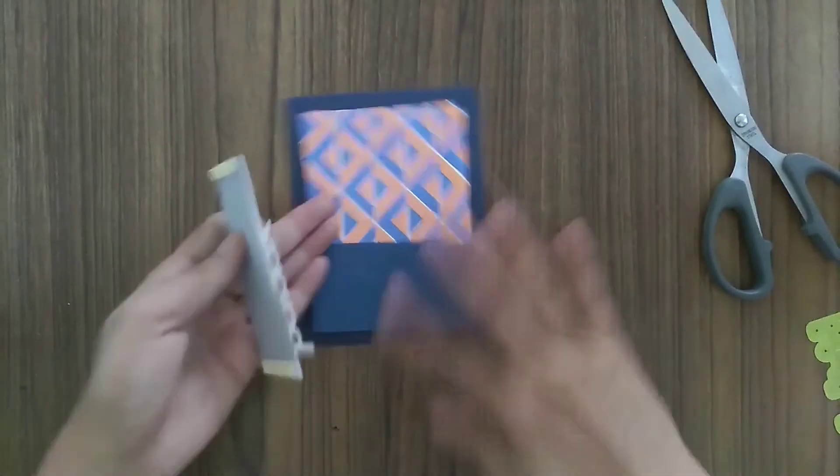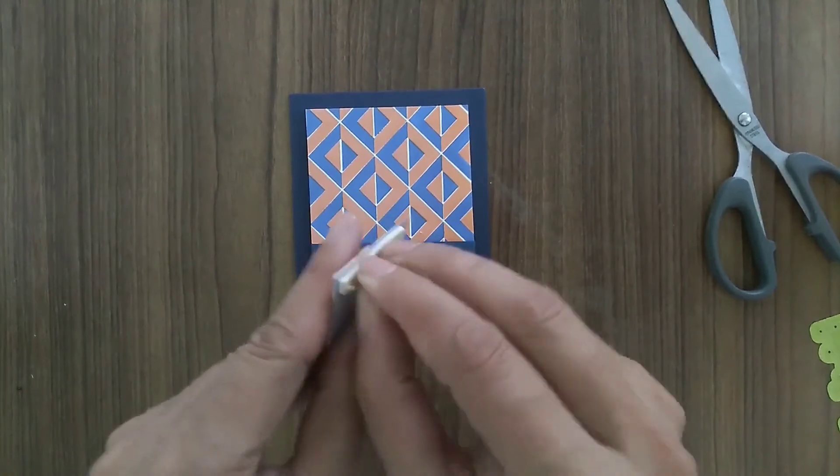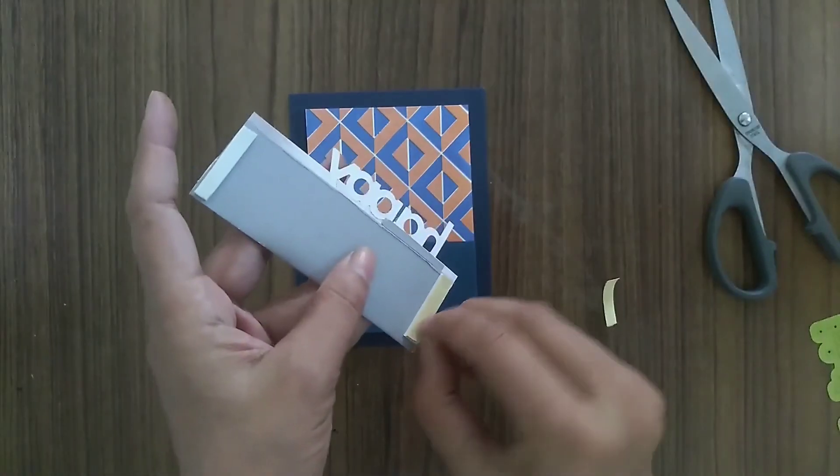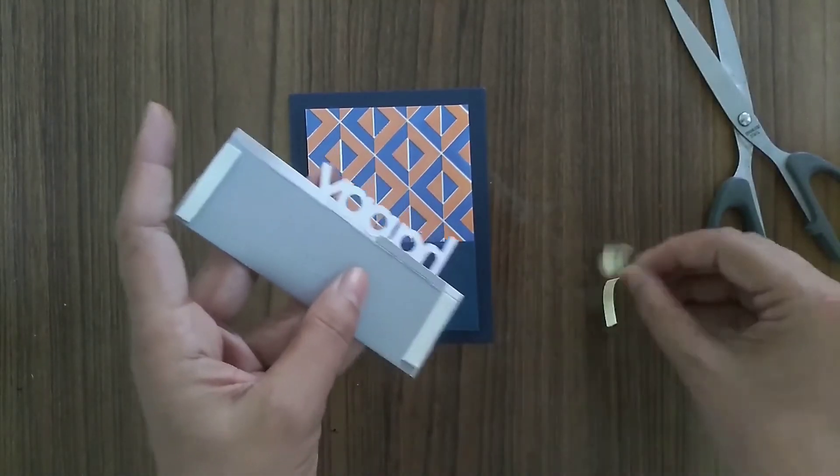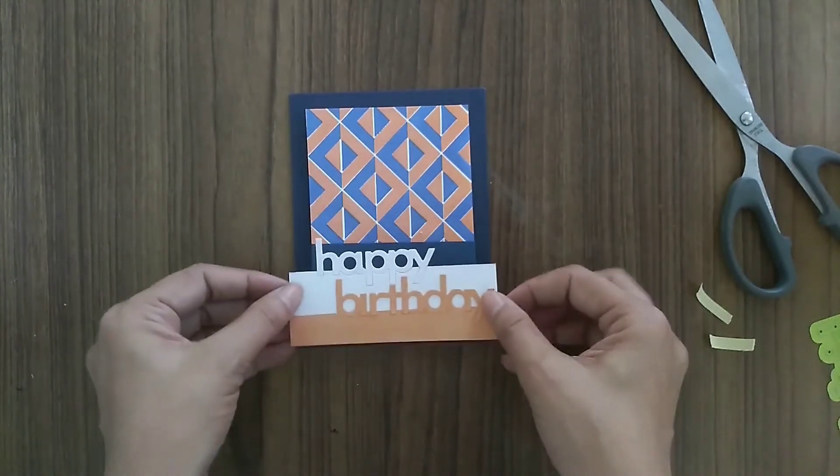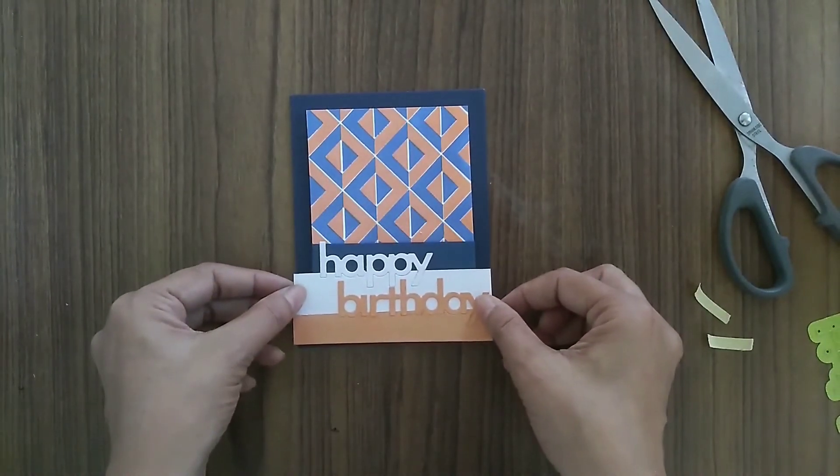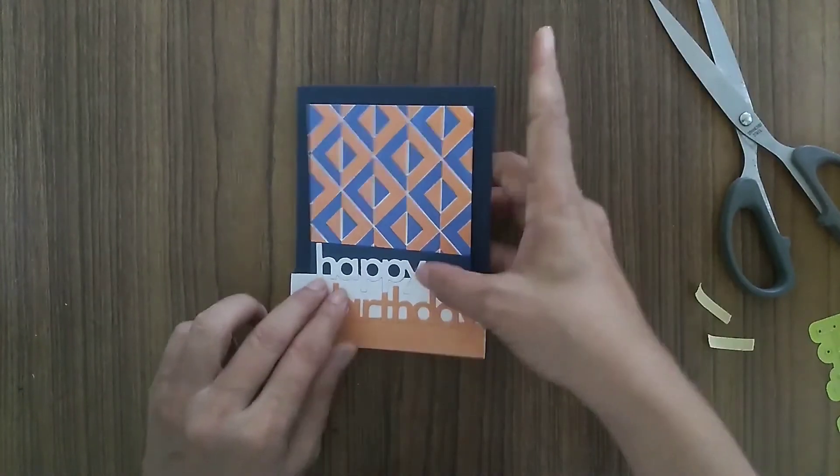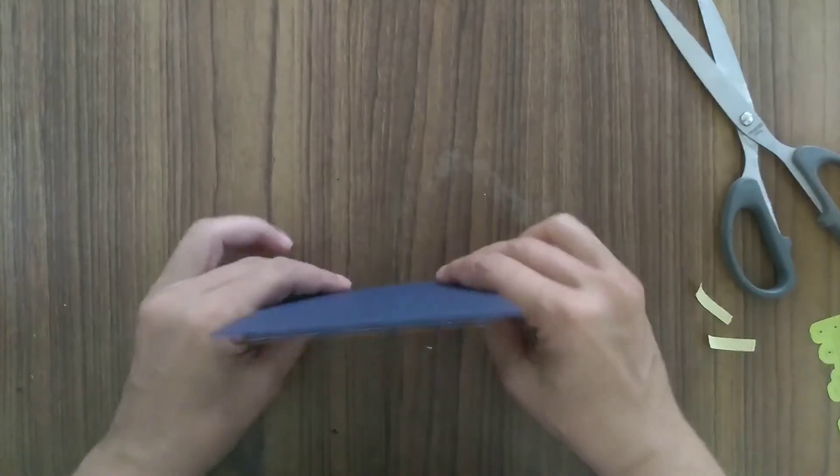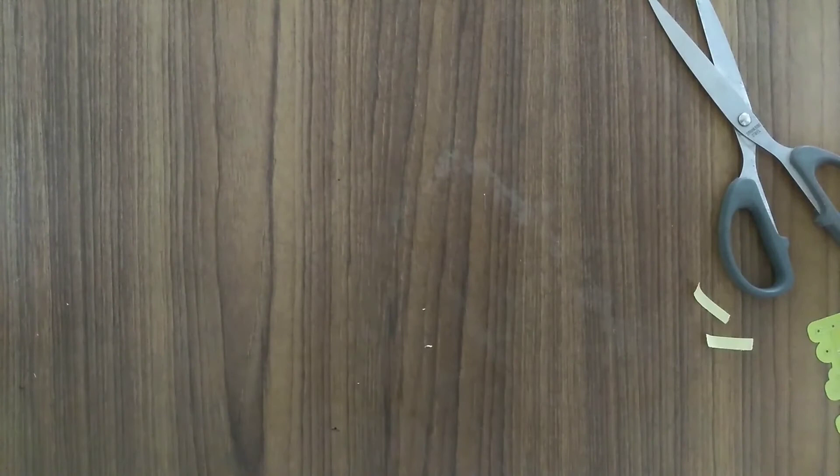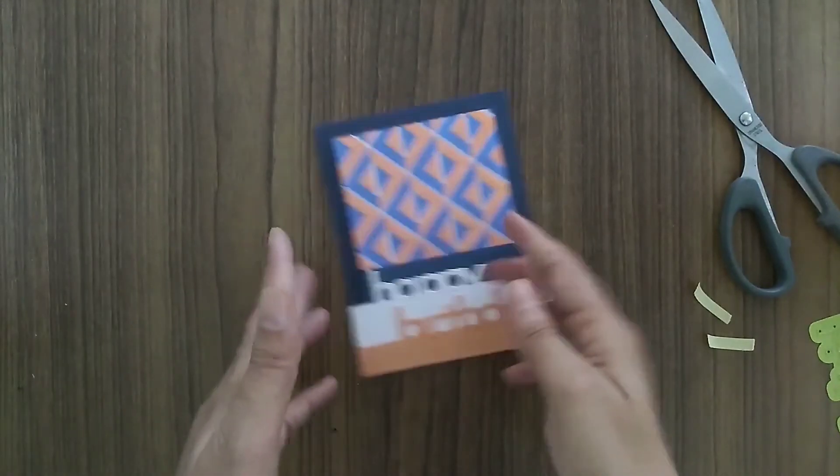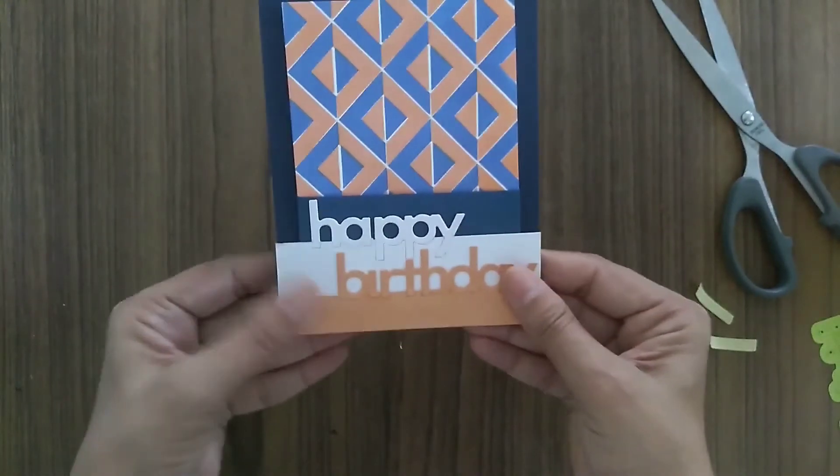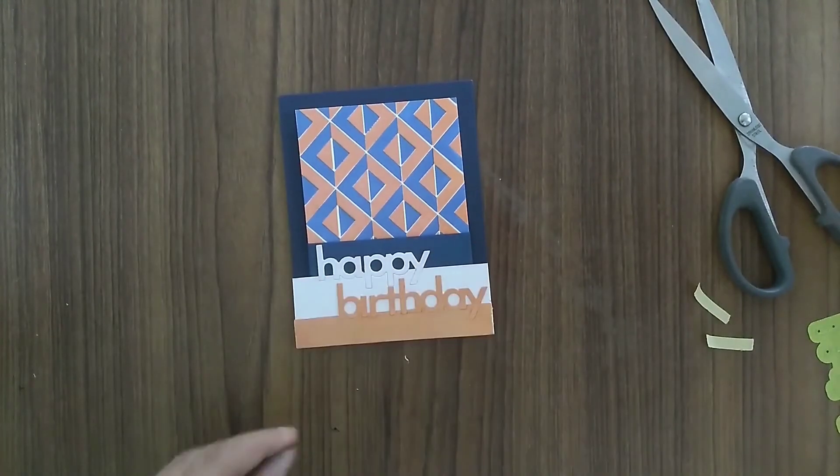Now I'll just remove the backing from the foam tape and stick the sentiment panel down. Just be very careful and accurate while doing this, because once the foam tape sticks it is difficult to remove. Now it's aligned properly. I will just make sure it's properly aligned at the bottom and then press down on the foam tape so that the panel is stuck. If there's a little bit remaining at the sides, you can always trim it off later, but this has come out pretty well. I'm happy with it.